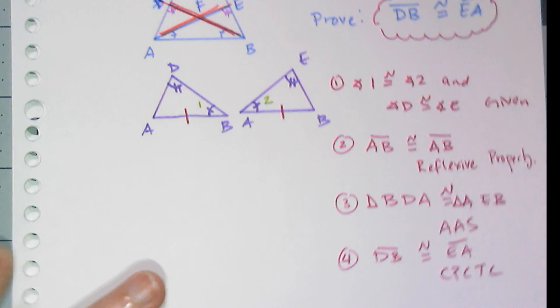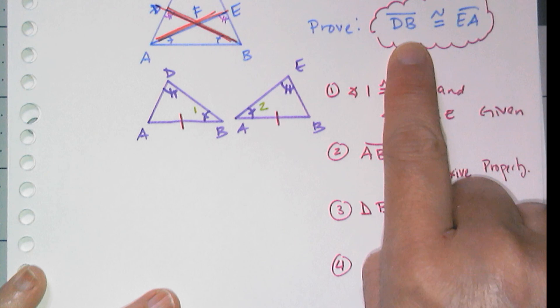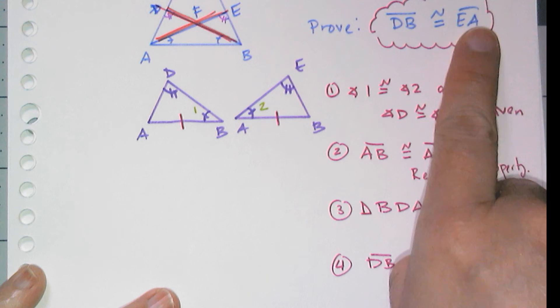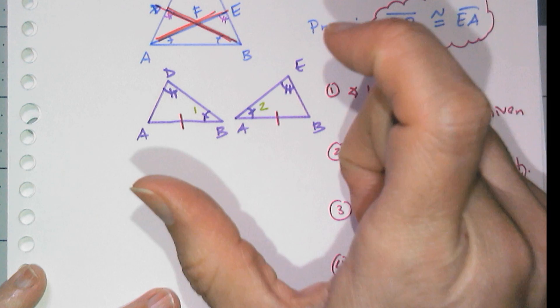That's it, just those four lines, and the reason why it's only four lines is because I started with what I was trying to prove and I tried to find triangles where these two links were actually whole sides of the triangle.